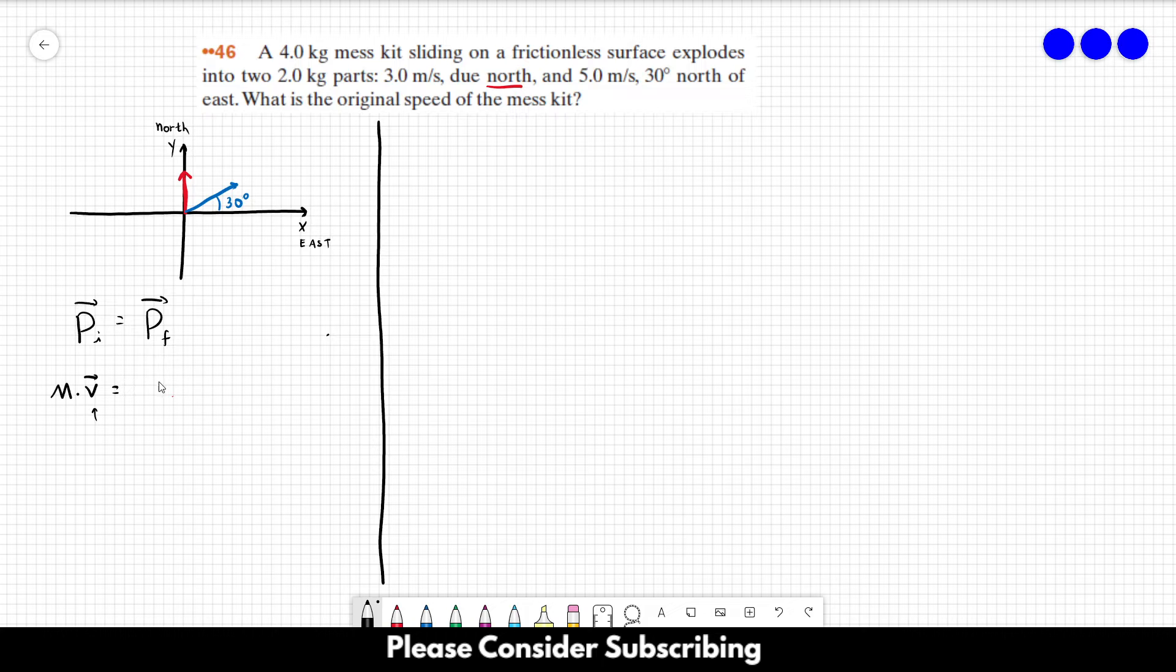That's what we want to find - we want to find the magnitude of this vector here. And the final momentum is the momentum of the red part, let's call it the red part, which has mass the initial mass over 2 times its velocity, so let's call it v1, plus the mass of the second part which is also m over 2 times its velocity.